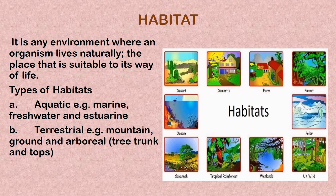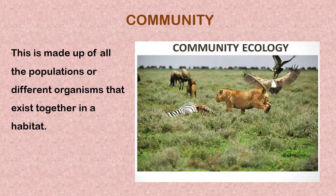As you can see in the picture on this slide, there are various habitats including the farm, the desert, forests, oceans, wetlands, tropical rainforest, savannah, and so on. Moving along, we'll be looking at another concept: the community.